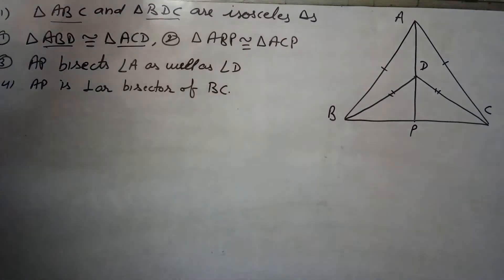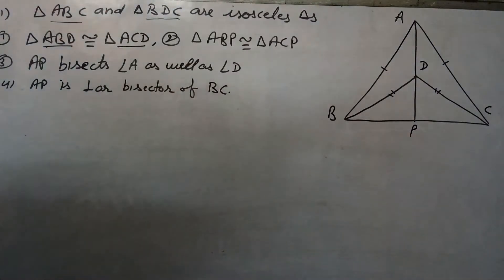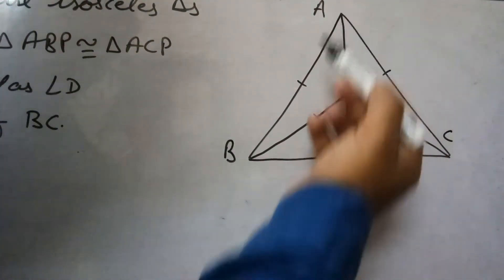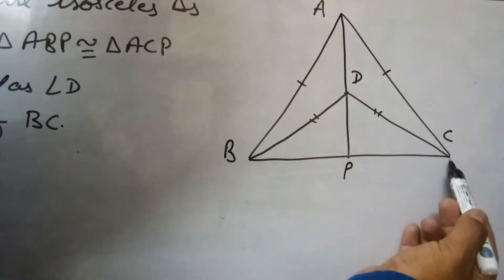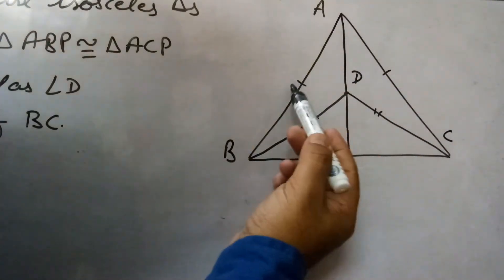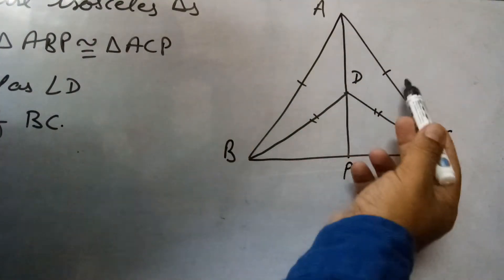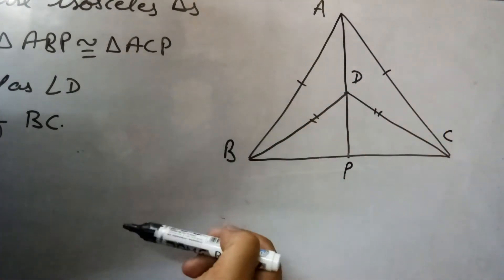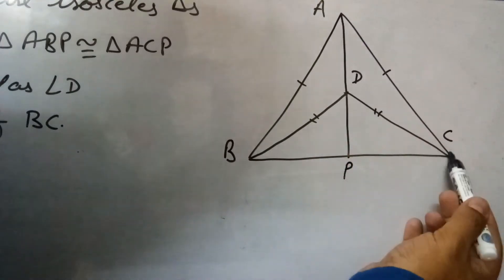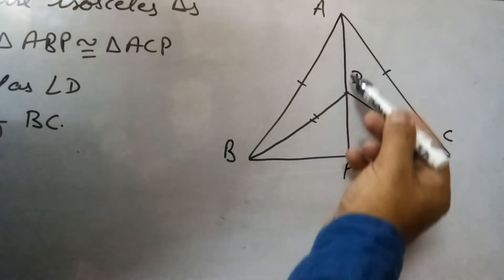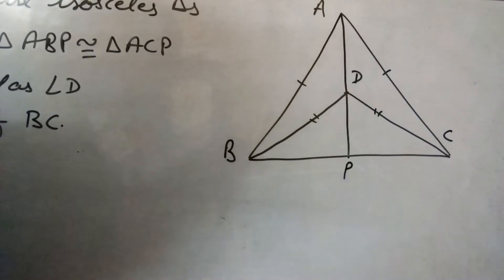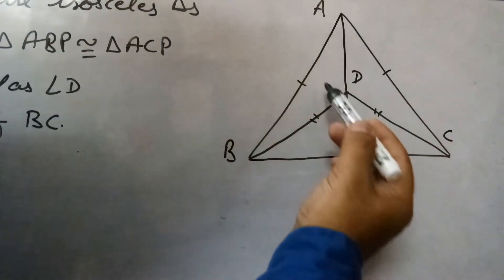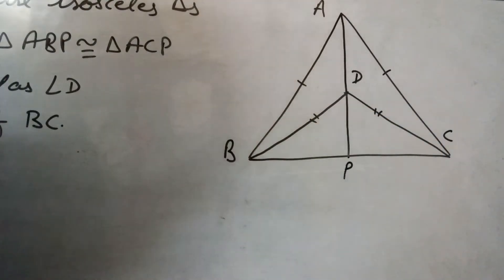Looking at triangles ABD and ACD: AB equals AC because triangle ABC is isosceles — that is given. Similarly, BD equals CD is also given, and AD is common to both triangles. So by Side-Side-Side congruency, these two triangles are congruent, which is the first part.